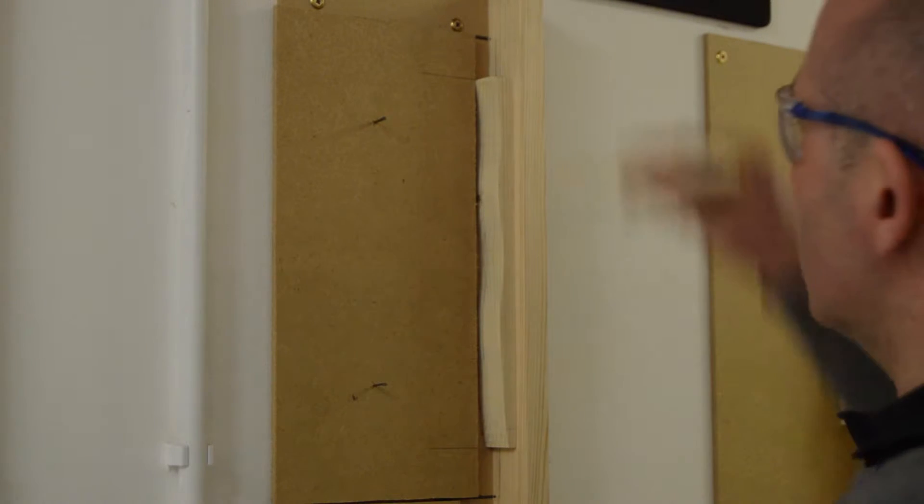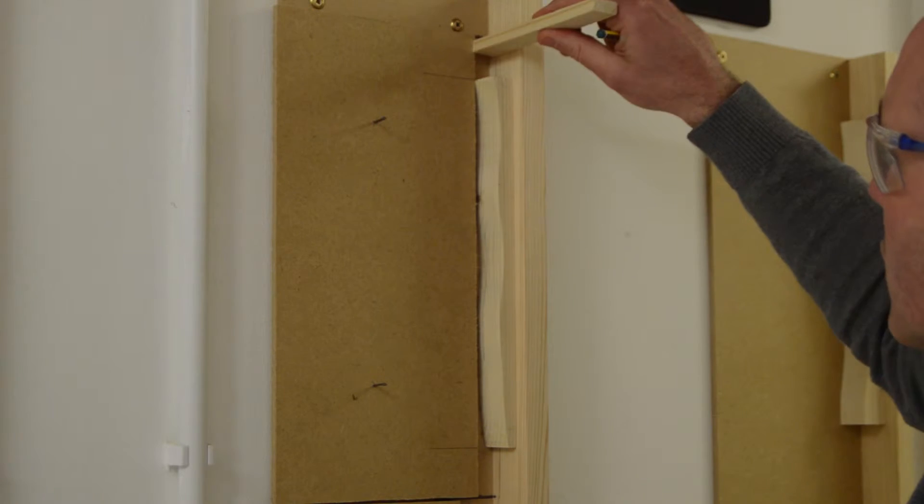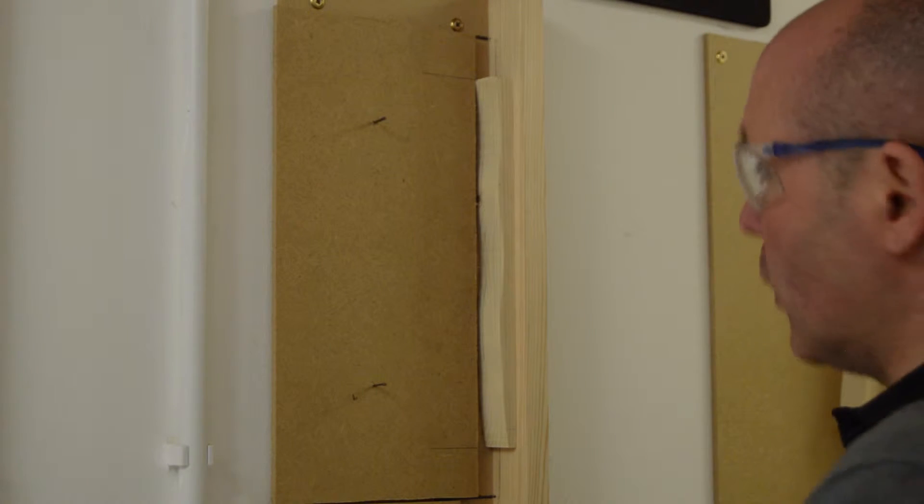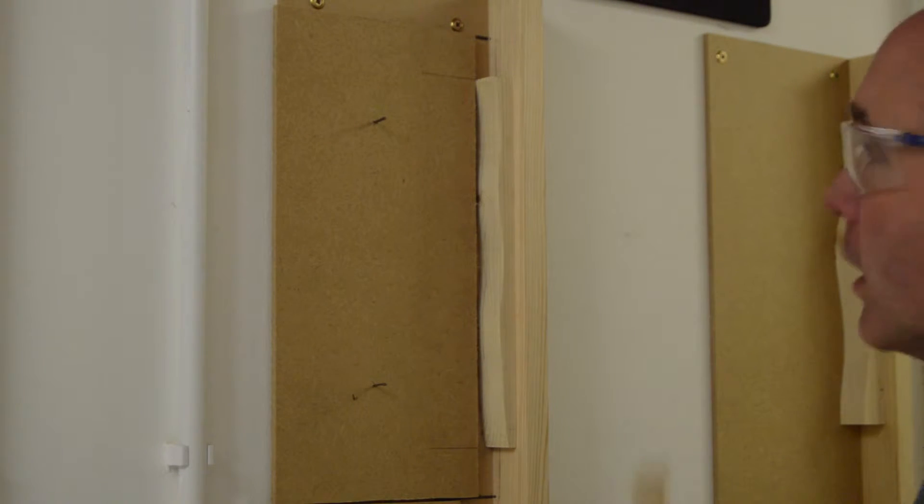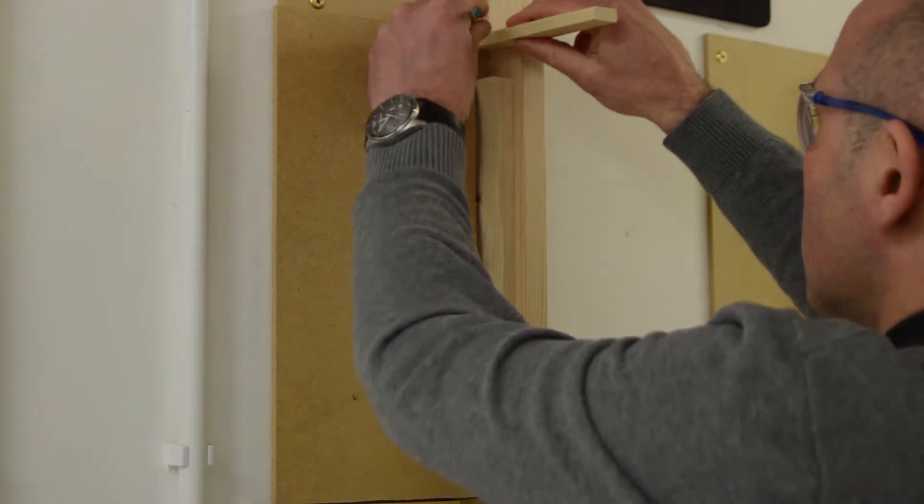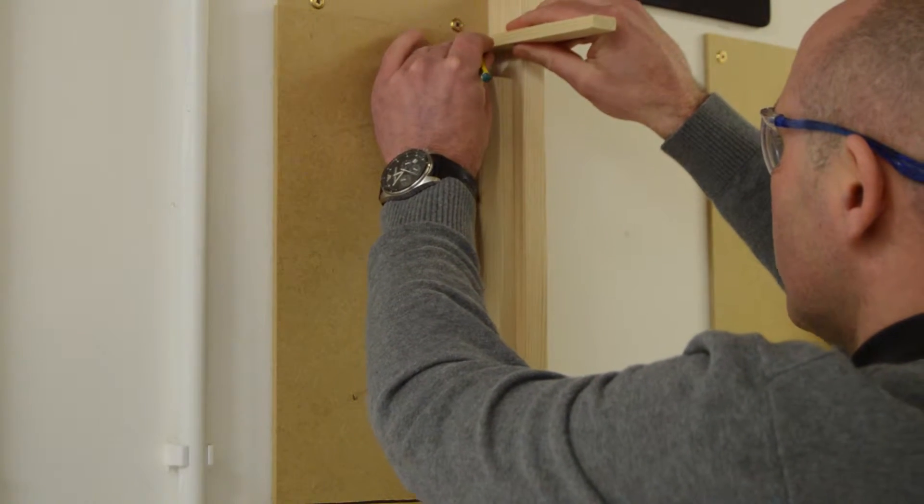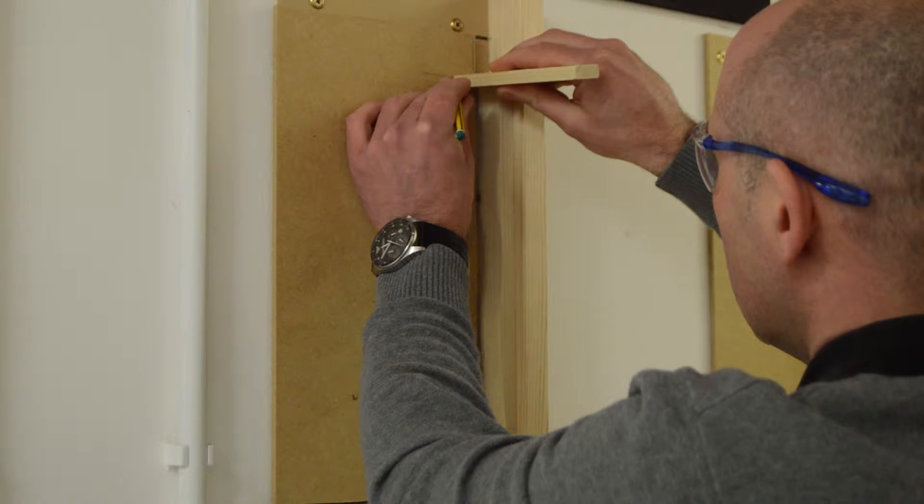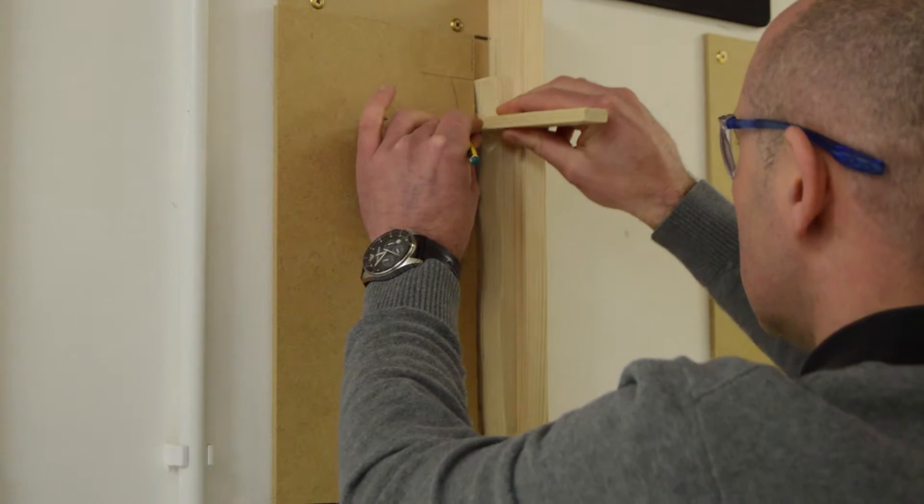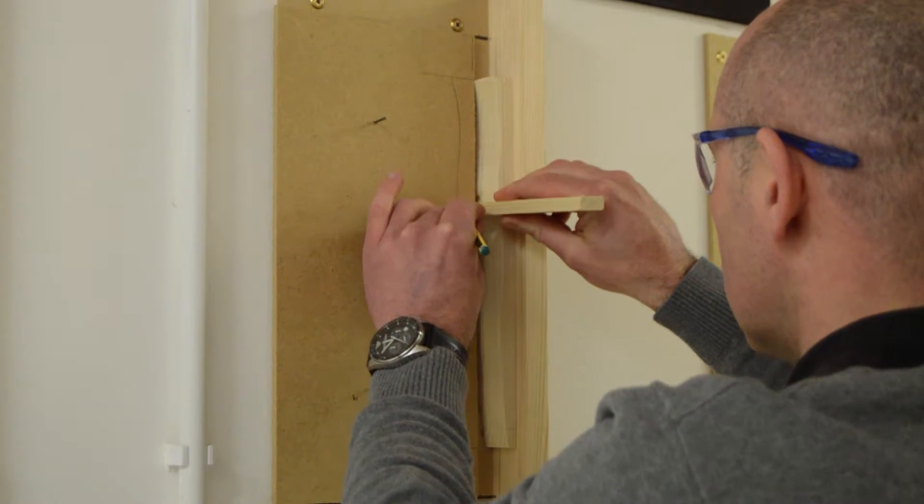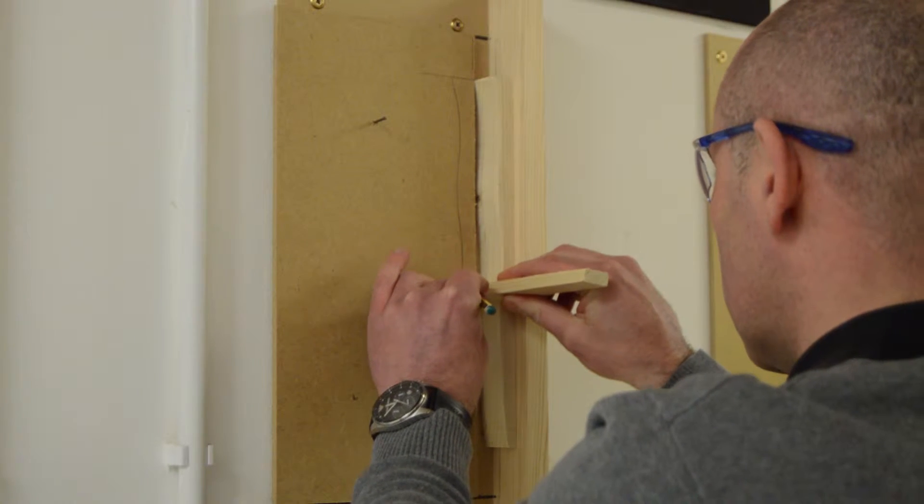Then using a piece of timber you can see it's just slightly bigger than what we need. It could be the same size as the widest point. I'm just going to go down and scribe around and again that's going to show us the exact line that we need to be cutting out.